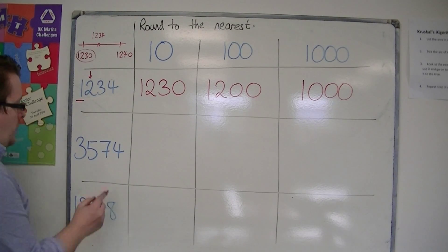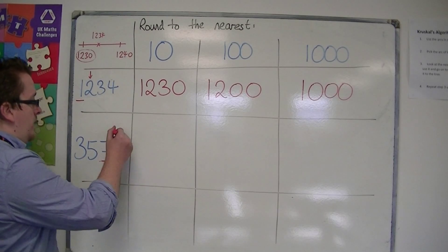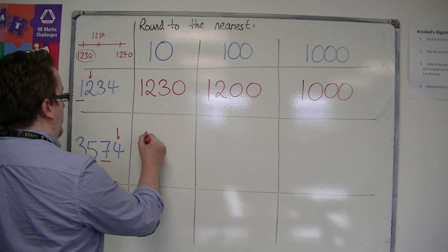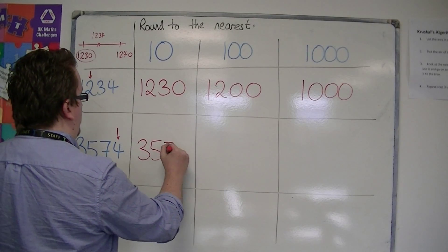Example number two. I look at the tens column first. The one to the right tells me to round down. So that's 3,570.